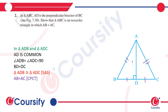Consider triangles ADB and ADC. In triangle ADB and ADC, AD is common, the angle is 90 degrees, and this side is equal to this side. So by Side-Angle-Side (SAS), triangle ADB and triangle ADC are congruent. Therefore, AB equals AC.